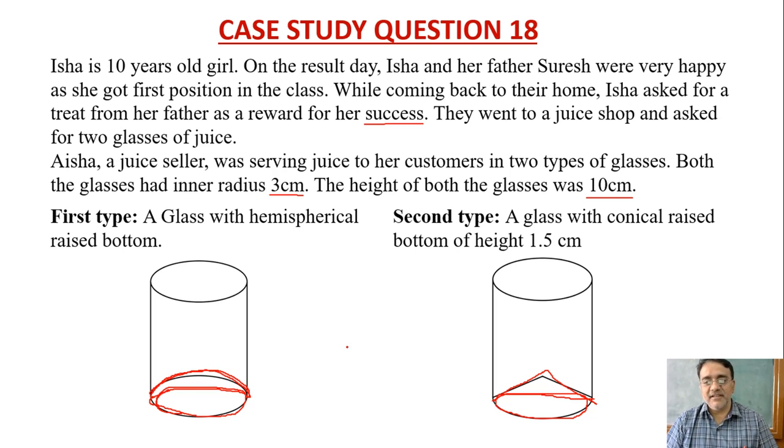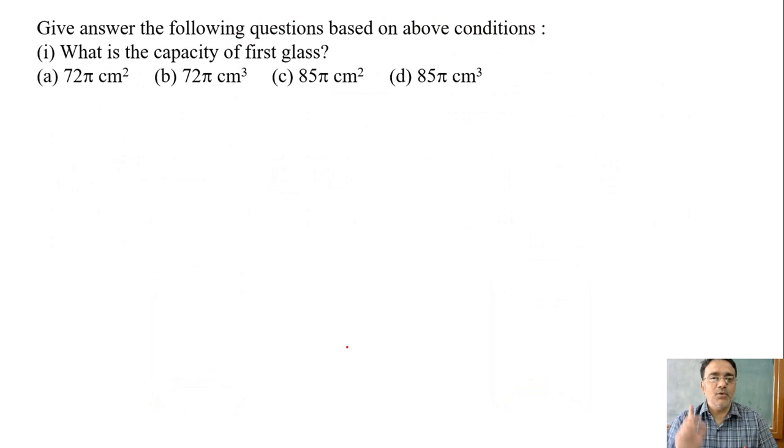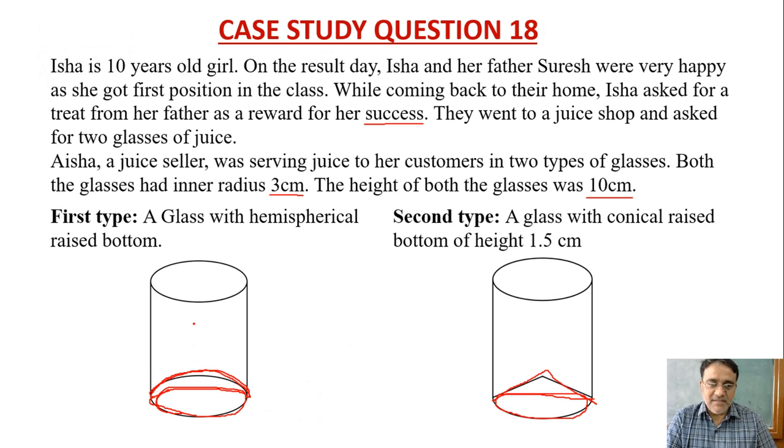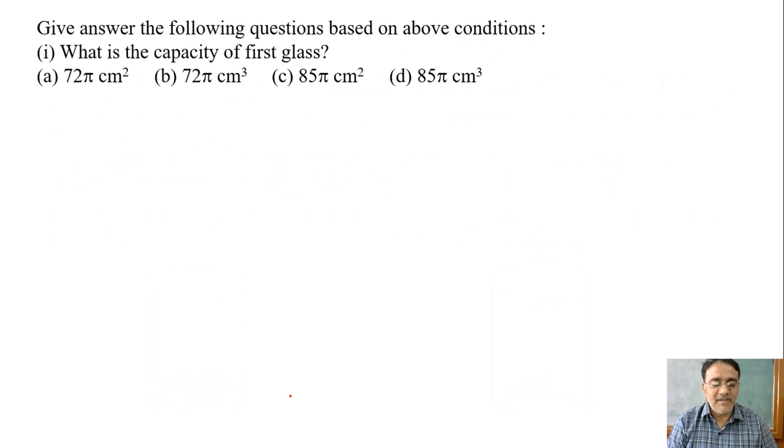Based on this, some questions are there. First question: what is the capacity of the first glass? The first glass doesn't have the full cylinder; this part is missing. So how will you find the capacity? Volume of cylinder minus volume of hemisphere. Very good.